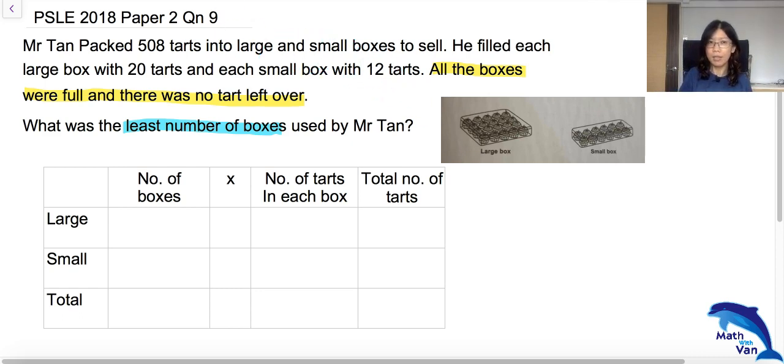So instead of random guessing, you must be sensitive to all these numbers that are presented in the question. We know that there were a total of 508 tarts, so 508 will be written over here, that is where the grand total is. That means when I add up the total number of tarts from the large boxes and the total number from the small boxes, that will give me a total of 508.